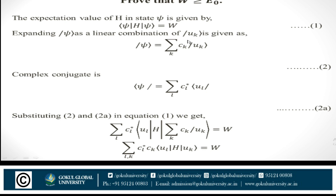The expectation value of H in state |ψ⟩ is ⟨ψ|H|ψ⟩ = W. Now, expanding |ψ⟩ as a linear combination of orthogonal eigenfunctions |u_k⟩, we have |ψ⟩ = Σ c_k |u_k⟩. The complex conjugate ⟨ψ| = Σ_l c_l* ⟨u_l|. Substituting into equation 1, we get Σ c_l* ⟨u_l| H Σ c_k |u_k⟩ = W, which simplifies to Σ c_l* c_k ⟨u_l|H|u_k⟩ = W.